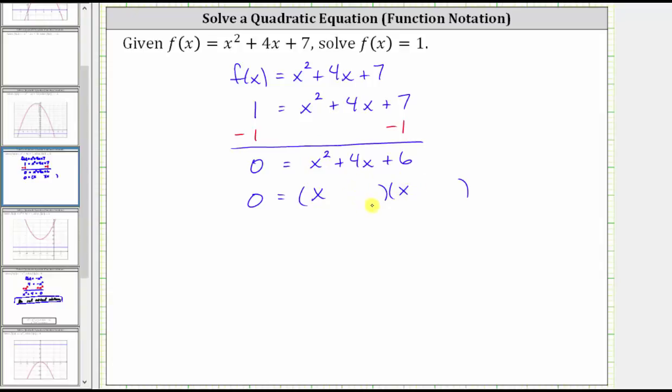The second terms in the binomials will be the factors of positive six that add to positive four. Let's list the factors of positive six. We have one times six, two times three.